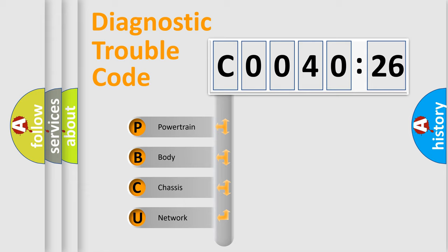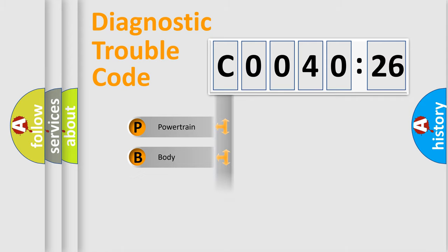We divide the electric system of automobile into four basic units: Powertrain, Body, Chassis, and Network.